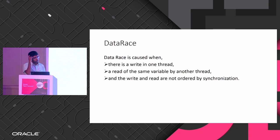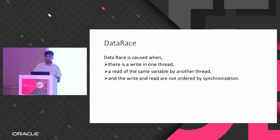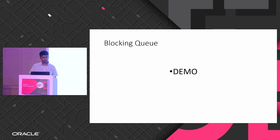This is what happens with a data race — when there is a write in one thread and a read of the same variable in another thread, and the read and write are not synchronized. I'll show a blocking queue demo — I just have the code, I can't execute it, so I'll just walk through it.